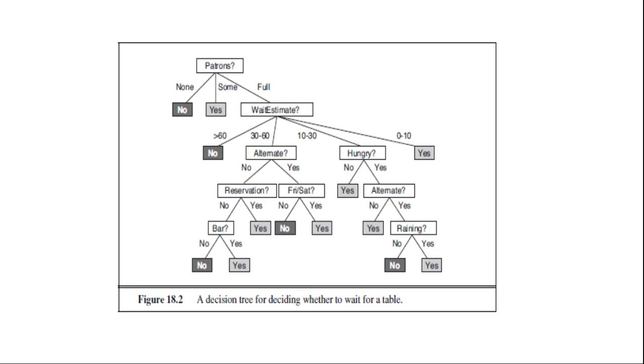Notice that the tree ignores the price and type attributes. Examples are processed by the tree starting at the root and following the appropriate branch until a leaf is reached. For example, with patron equals full and weight estimate equals 0 to 10, it will be classified as positive. You can check there, and it says yes.